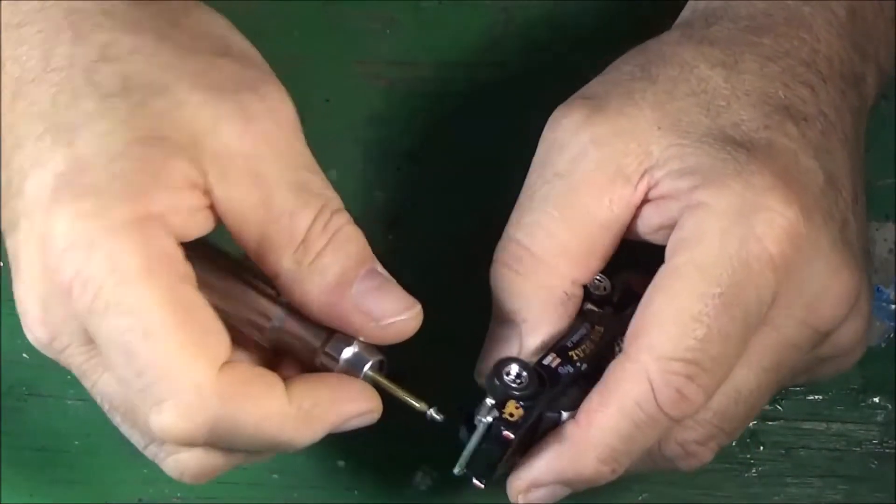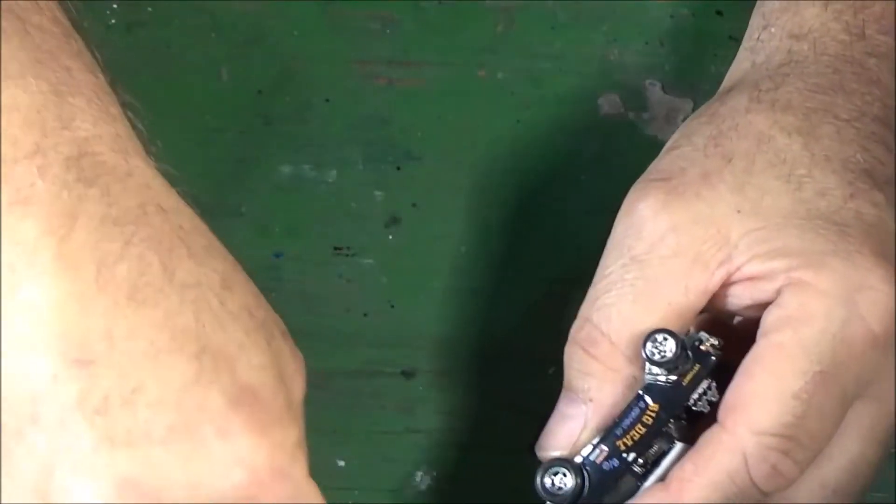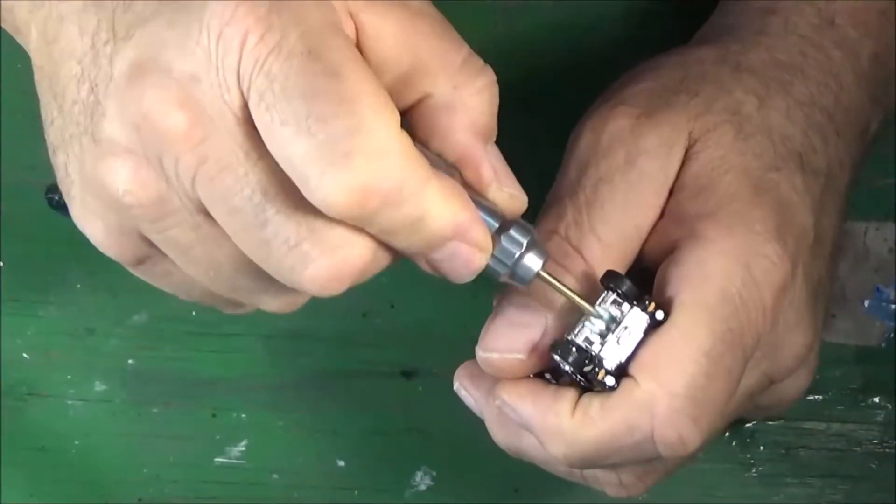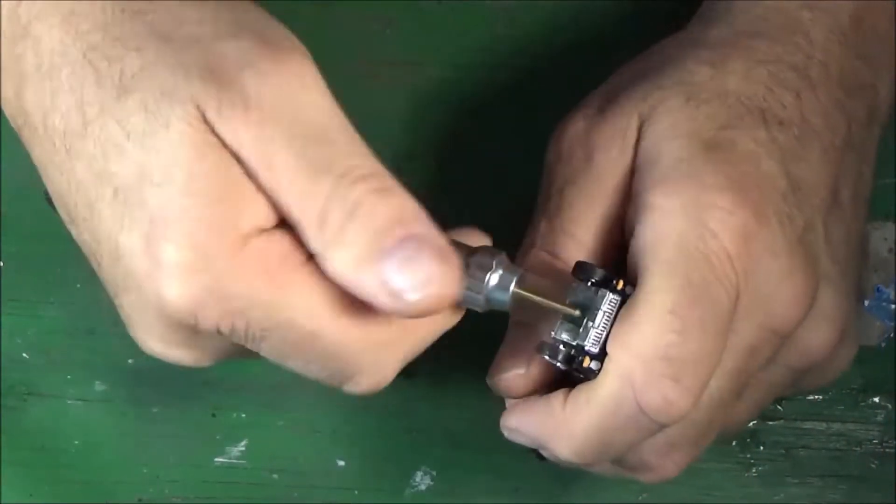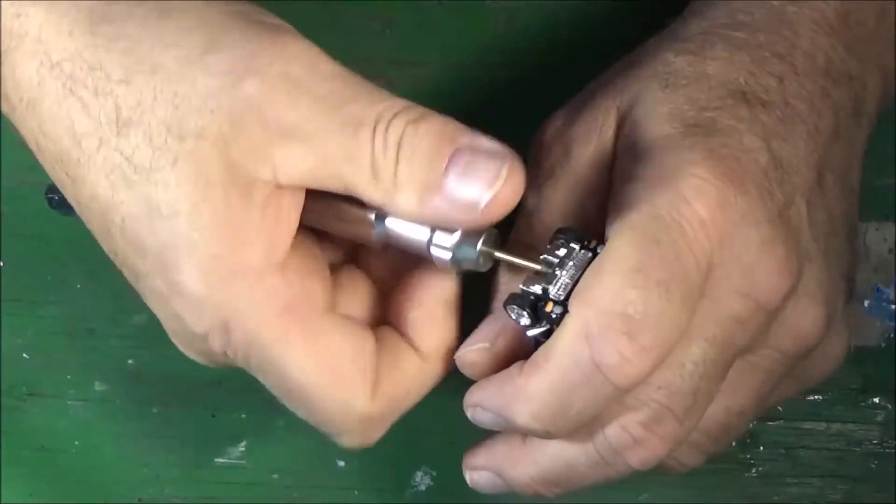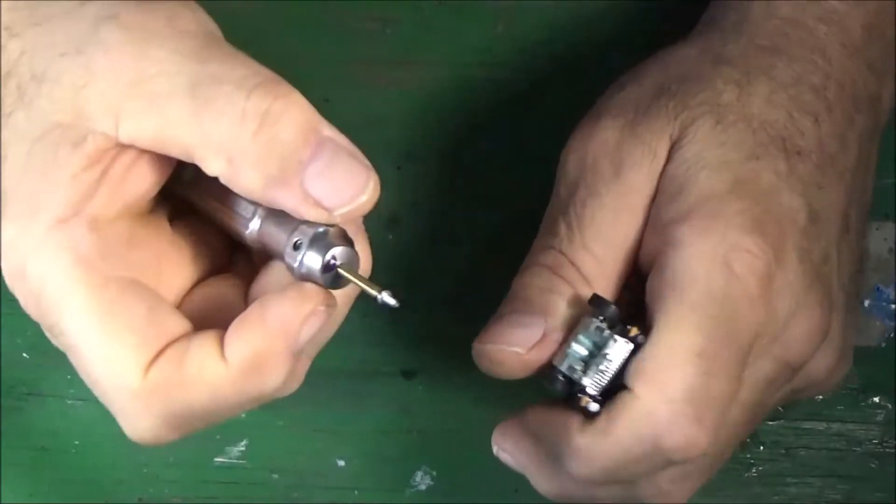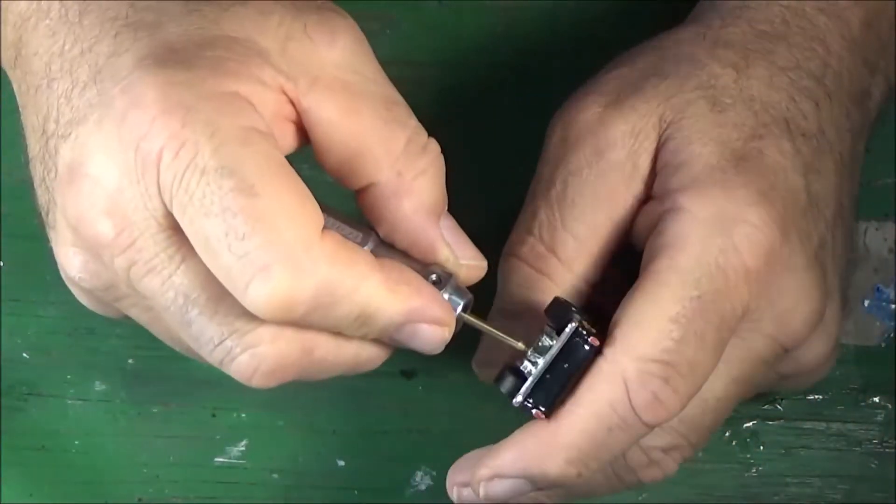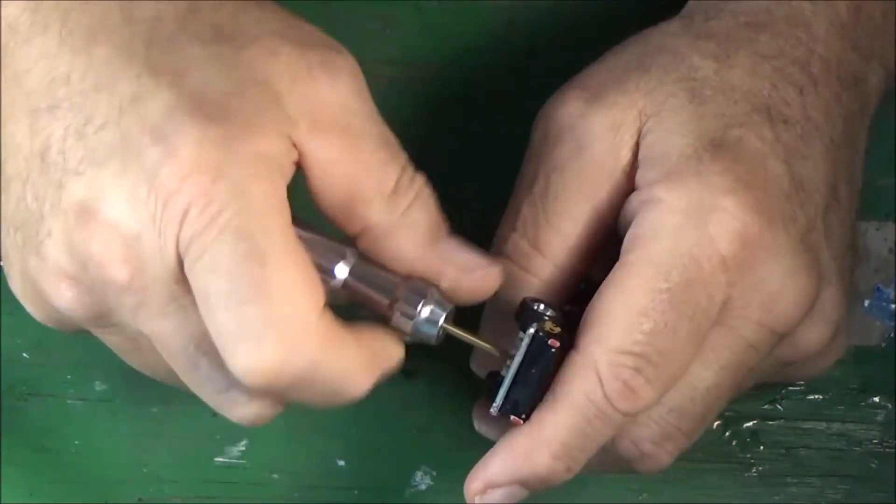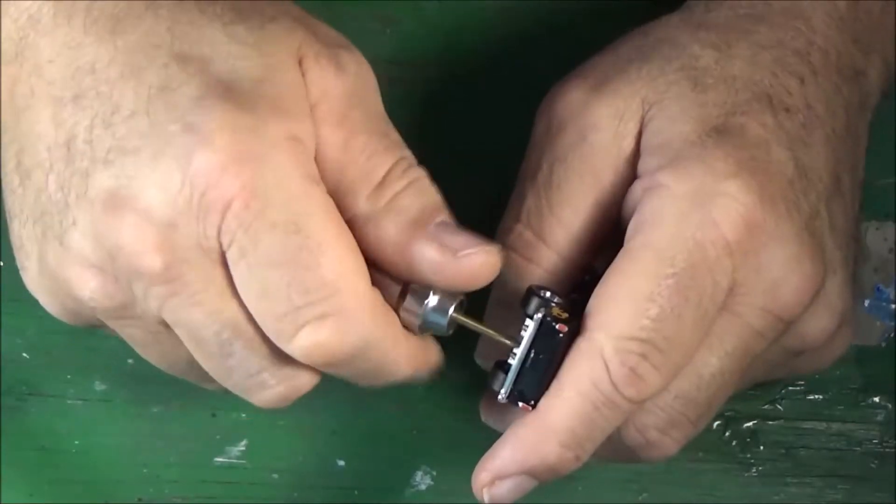But I think I put screws in backwards. Let's see. That's a short screw. Yeah, I think this one's longer. Longer one goes in the back. Short one goes in the front. A little bit longer. Got to be careful not to go through the radiator.